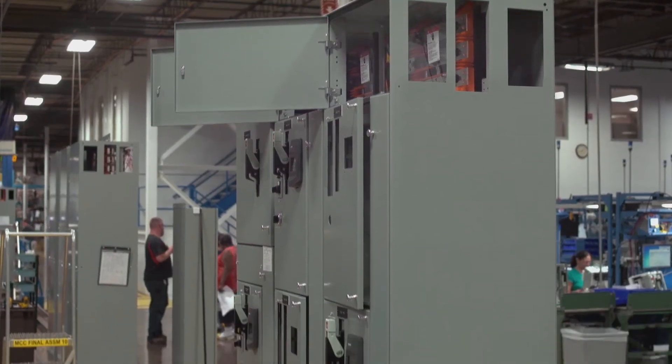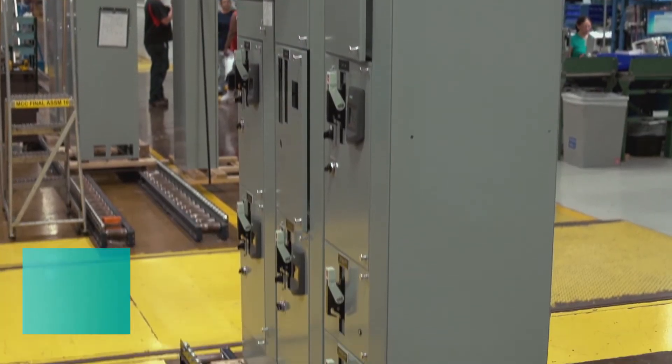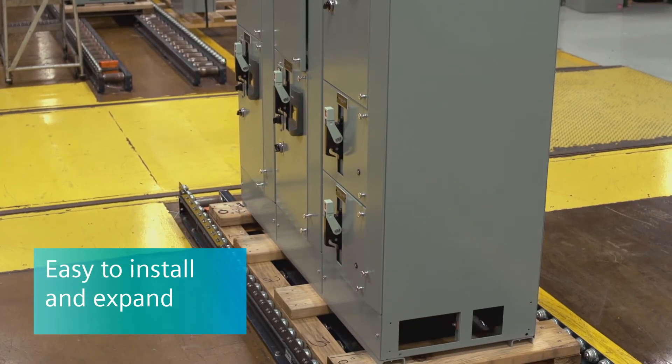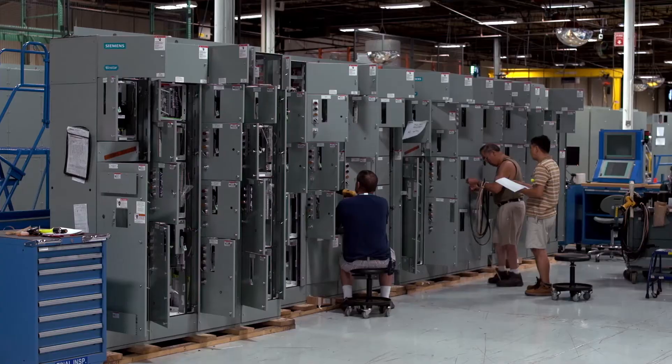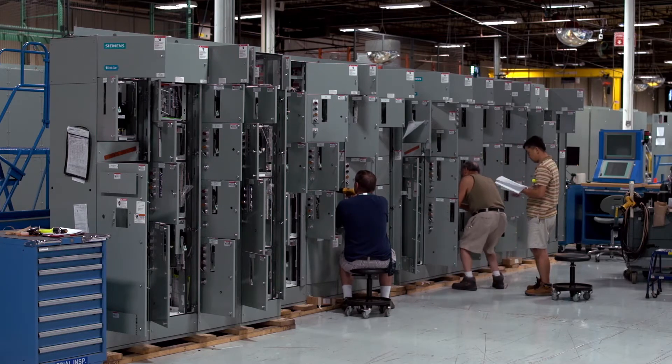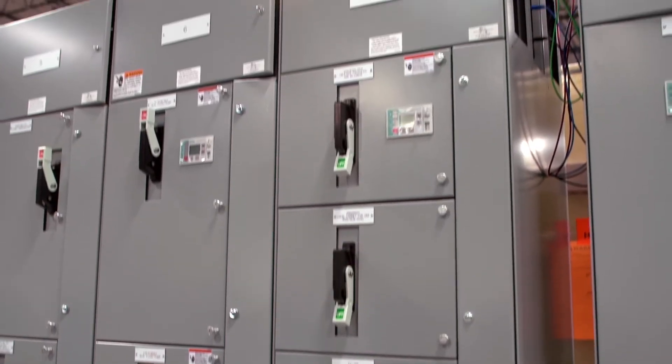Side access cover panels on the top and bottom of the MCC structure make it easy to link units together. They also help with installation, and as your operation grows and expands, connecting additional structures is simple.